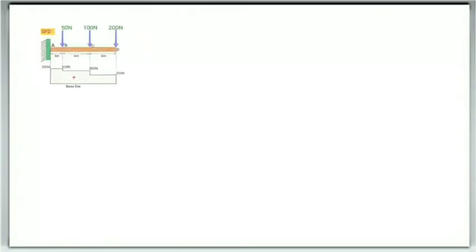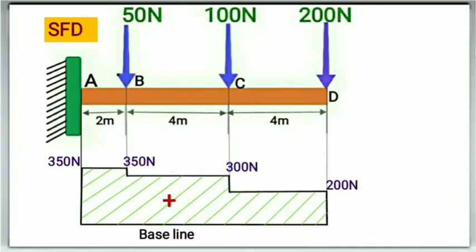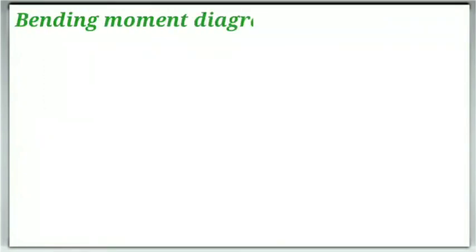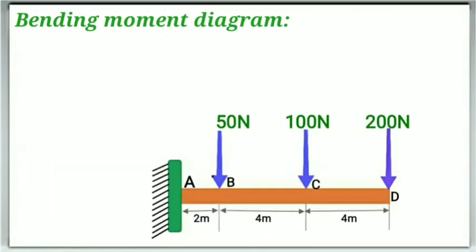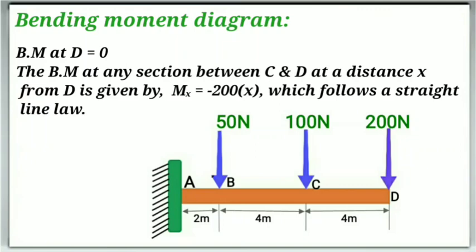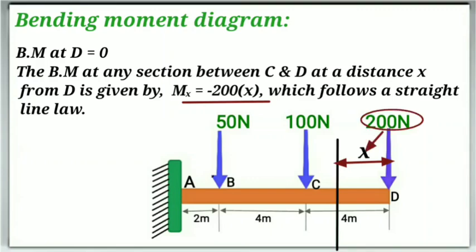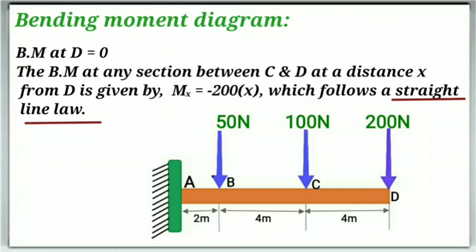For a clear visibility the shear force diagram will look like this. For drawing the bending moment diagram we will calculate the values of bending moment at all four points A, B, C and D. The bending moment at point D will be equal to 0, and the bending moment at any section between C and D at a distance X from point D will be given by Mx equal to minus 200 into X, which follows a straight line law. This means the bending moment diagram between C and D will be a straight line but with a negative slope.